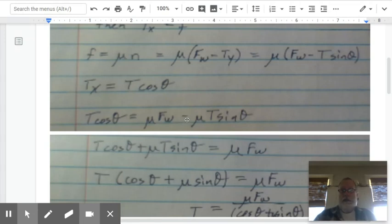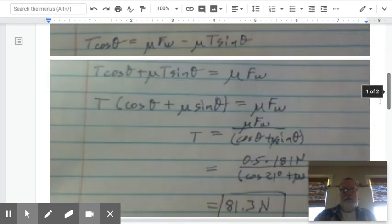And so the first thing I'm going to do is I'm going to add this to both sides. And I end up with T cosine plus mu T sine theta equals mu FW, which is the weight of the sled. Then I pulled the T out. And so I have cosine theta plus mu sine theta equals mu times the weight of the sled. Then I'm going to divide both sides by what's in the parentheses here.